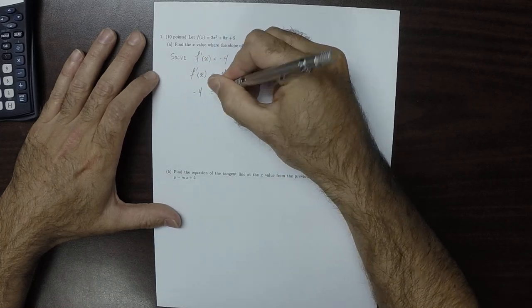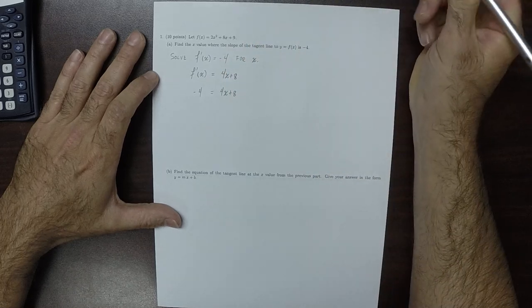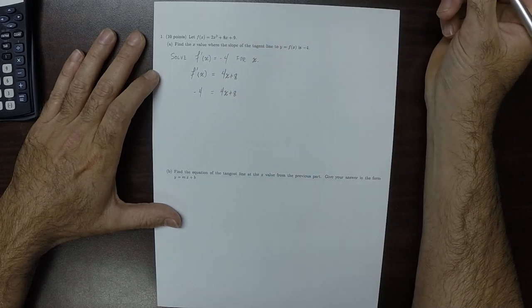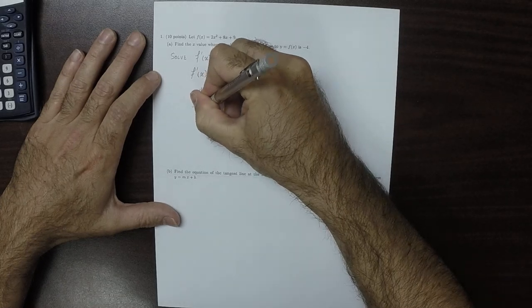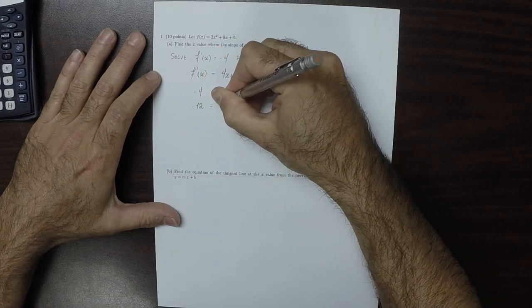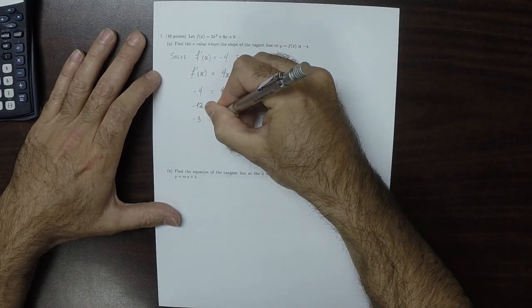So negative 4 is 4x plus 8. Subtract 8 from both sides, so negative 12 is 4x. And then divide by 4, so negative 3 is x.